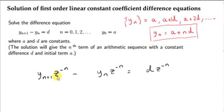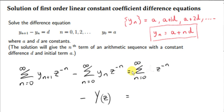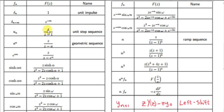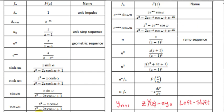The first step is to multiply the difference equation by z to the power of minus n, then sum from 0 to infinity. Notice that this term is the z-transform of the sequence y(n), which we write as big Y(z). The constant d can be factorized out. Like before, we replace 1 with u(n) because u(n) equals 1 for n equals 0 to infinity. So we have d times the z-transform of u(n), which is z over z minus 1. The z-transform of the shifted sequence y(n+1) is z·Y(z) minus z·y₀.